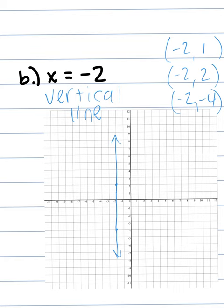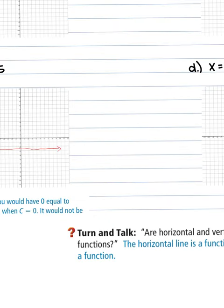Did you get a vertical line? When we have x equals a number, we're always going to get a vertical line. In your groups, compare your answers. If you got it wrong, figure out why and share that mistake with your group so everyone can learn from it.